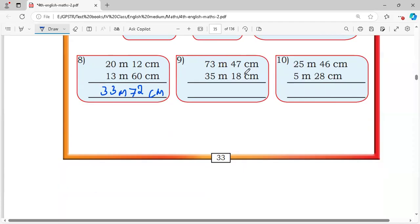Problem 9: 7 plus 8 is 15, carry 1. 4 plus 1 is 5, 5 plus 1 is 6, 3 plus 5 is 8, 7 plus 3 is 10, equals 108 meter 65 centimeter.